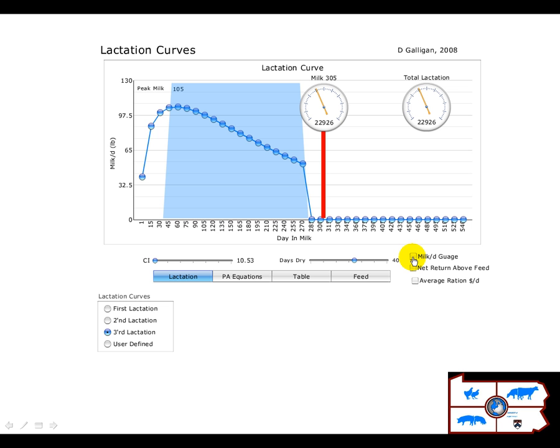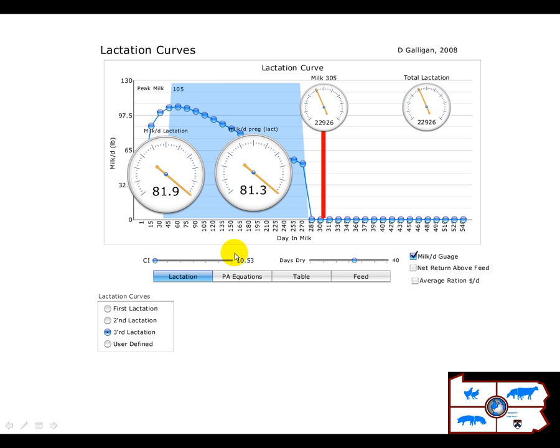So here I'm looking at what her average milk is the entire lactation, and this is the milk that she produces per day of pregnancy. And so we can see that they're very similar because, indeed, most of the lactation curve, the cow is pregnant.